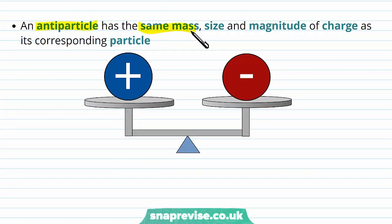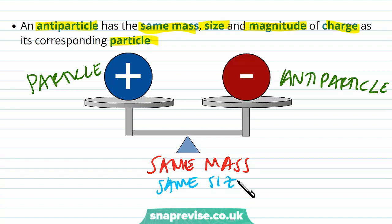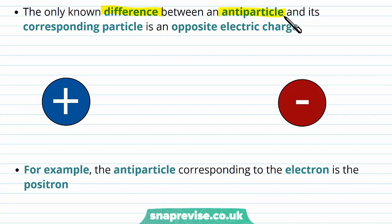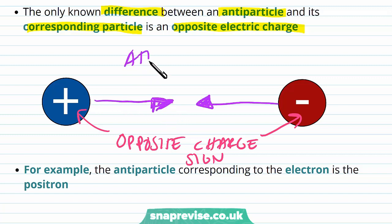Every particle has a corresponding anti-particle. An anti-particle has the same mass, size, and magnitude of charge as its corresponding particle. They have the same mass, the same size — which also tells us they must have the same density — and the same charge magnitude. The only known difference between an anti-particle and its corresponding particle is an opposite electric charge, so one is positively charged and one is negatively charged.